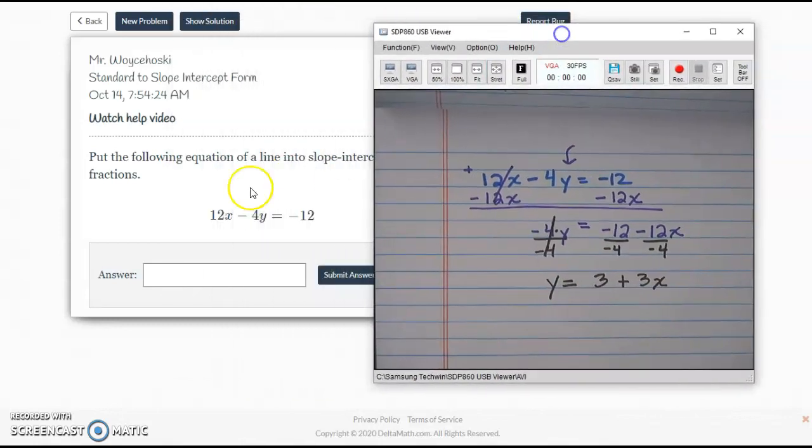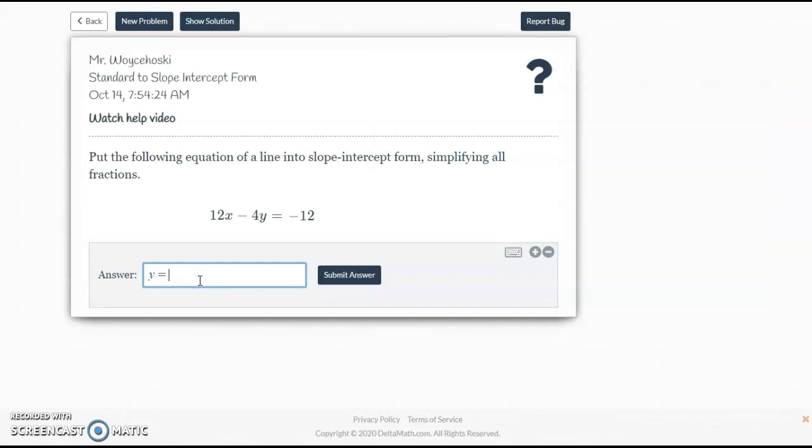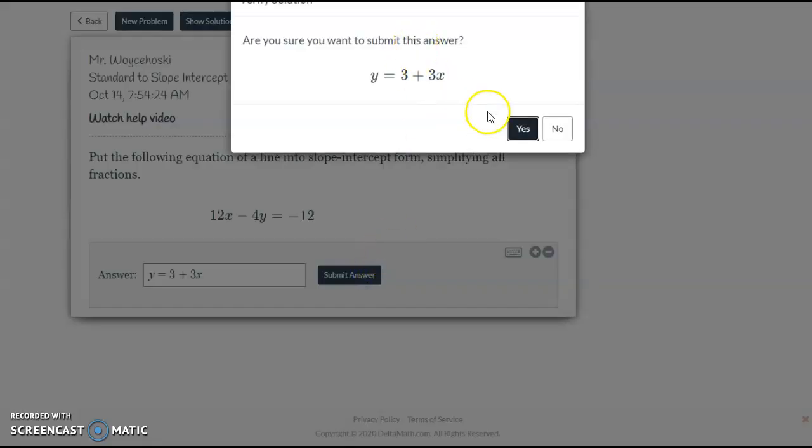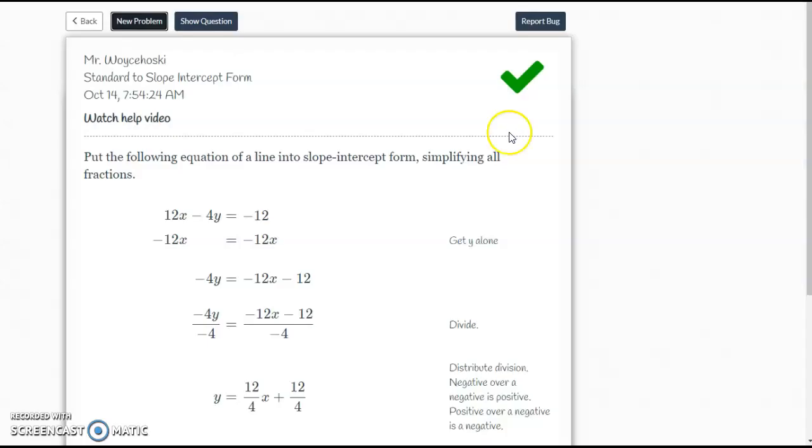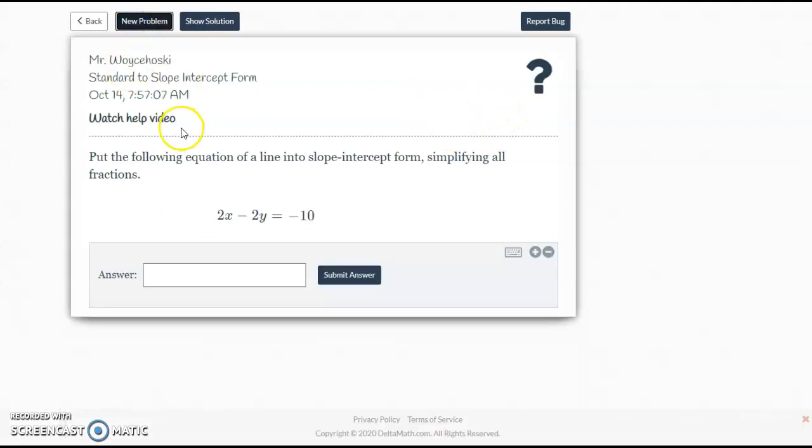So if we come over to the program, we're going to type in that answer. Y equals 3 plus 3x. I'm going to submit my answer, and hopefully it's good to go. Are you sure you want to submit it? Yeah, I'm sure. And I got it right. And you're going to go through, and you're going to do a few of these. This one looks like it's going to have no fractions, so I'm going to keep going. This one will have a fraction.